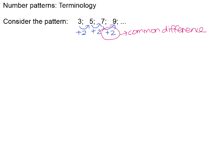We refer to the terms of the pattern as the TN values, and the position number of each term as the N value. So when we're talking about N in a pattern, we're talking about the position number. When we're talking about TN, we're talking about the term in that position. For example, if I asked you what is T3, that means I'm looking for the value of the term in the third position — position 1, position 2, position 3 — so the value of the third term is 7.